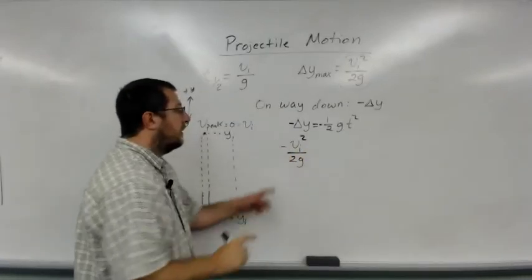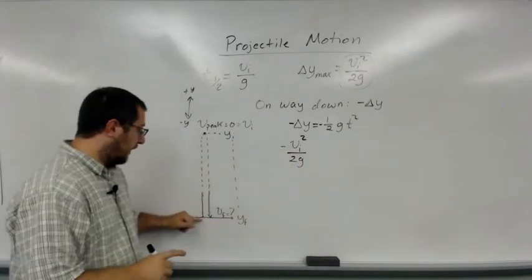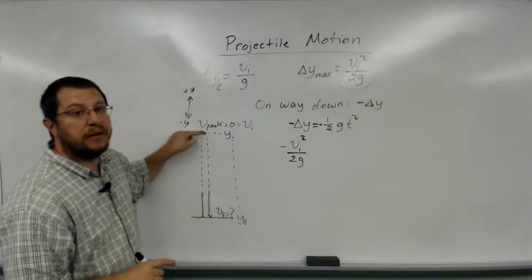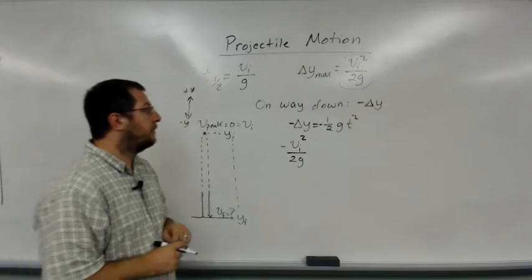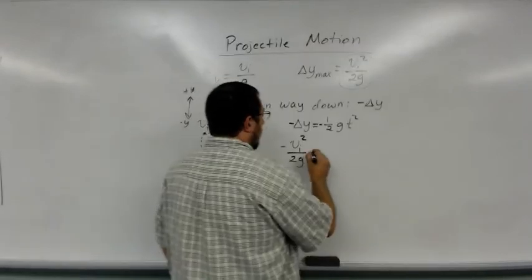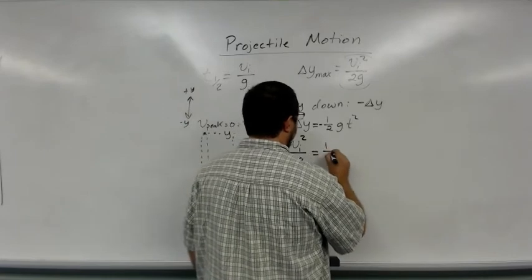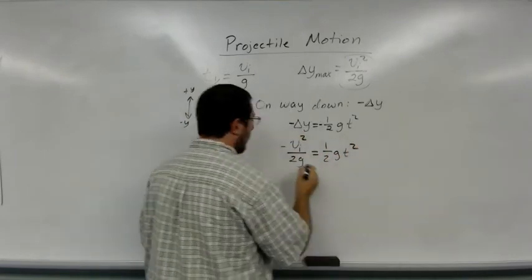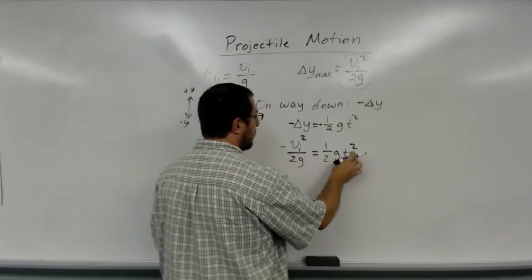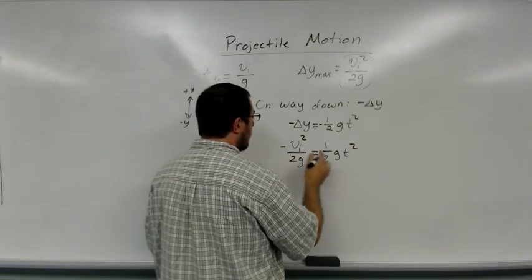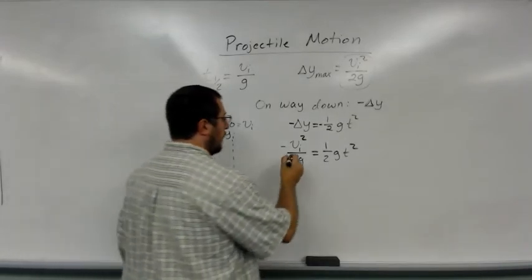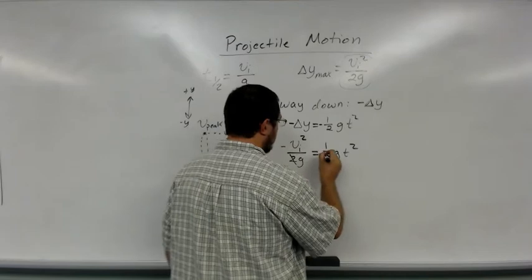Here, vi is the initial velocity it was launched with, not what we considered the initial velocity of the peak. This equals ½gt². If I want to solve for t, my twos go away. My negative signs cancel out, and I get vi²/g² = t².